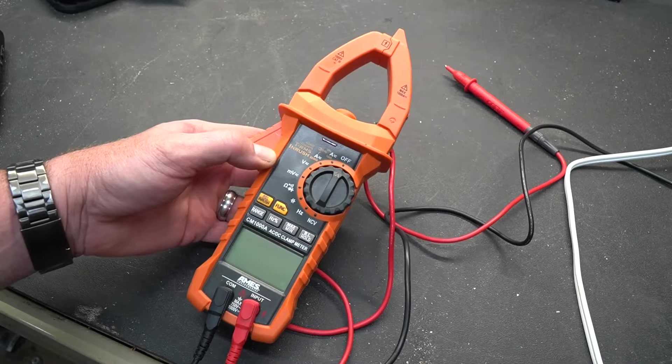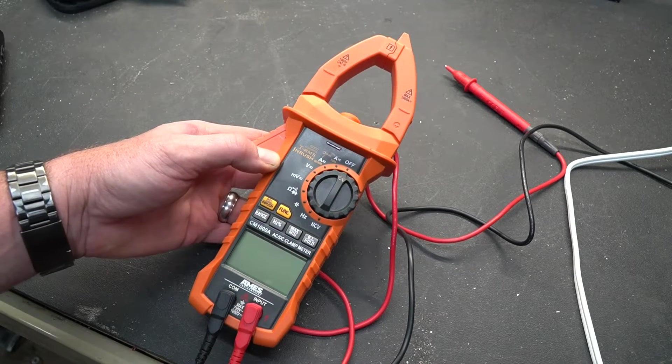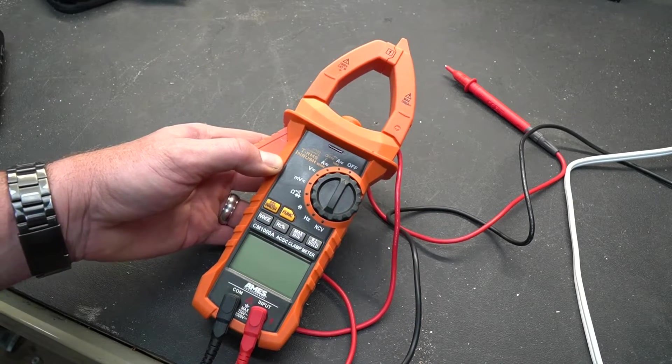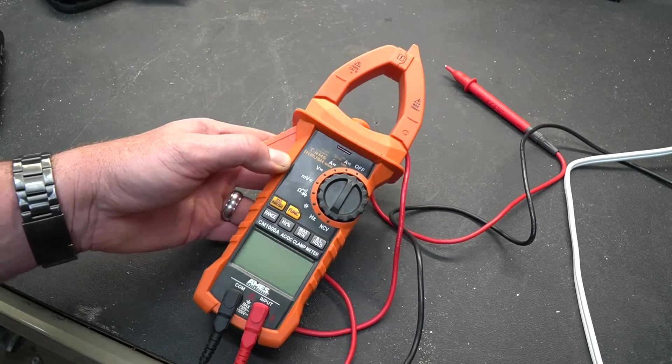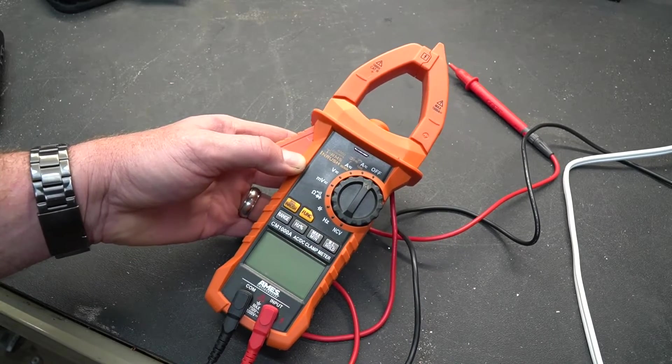Now this meter is chocked full of features and options and this is more of a professional meter. It's a little bit high in the price range for the DIYer as it comes in right around 99 bucks at Harbor Freight. But if you do this professionally this meter is actually priced very cheap. Some of its competitors are going to cost you well over $200.